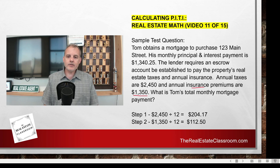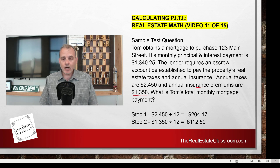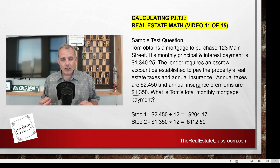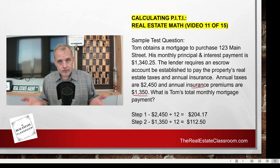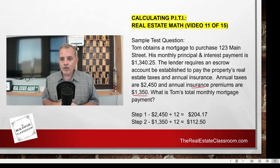Step two: we break down our annual insurance premiums into a monthly cost. We take $1,350, which is the annual insurance premium, and divide it by 12 months. That gives us a monthly cost of $112.50.